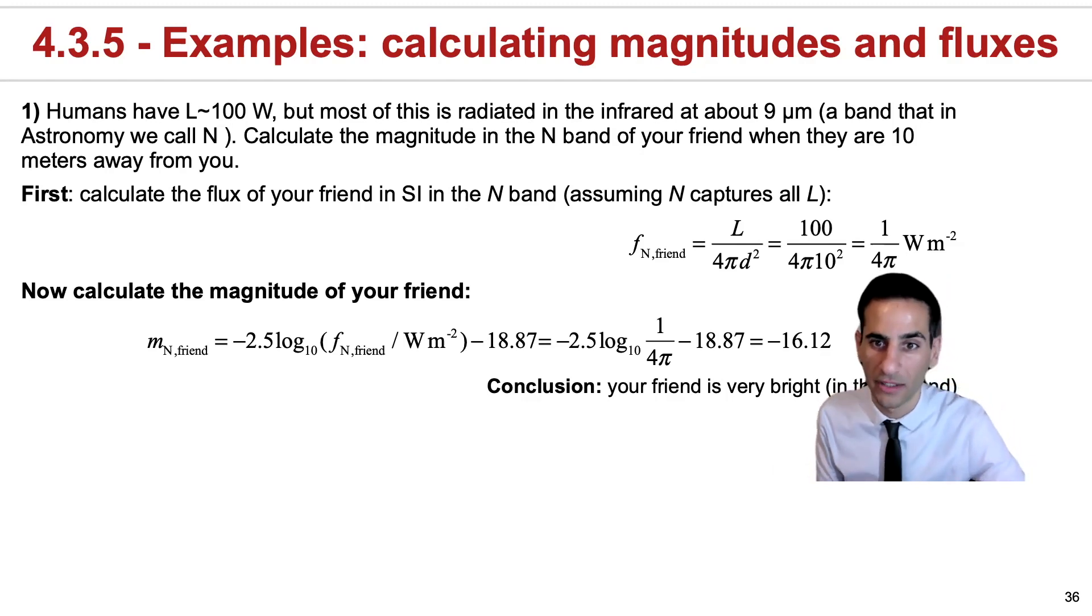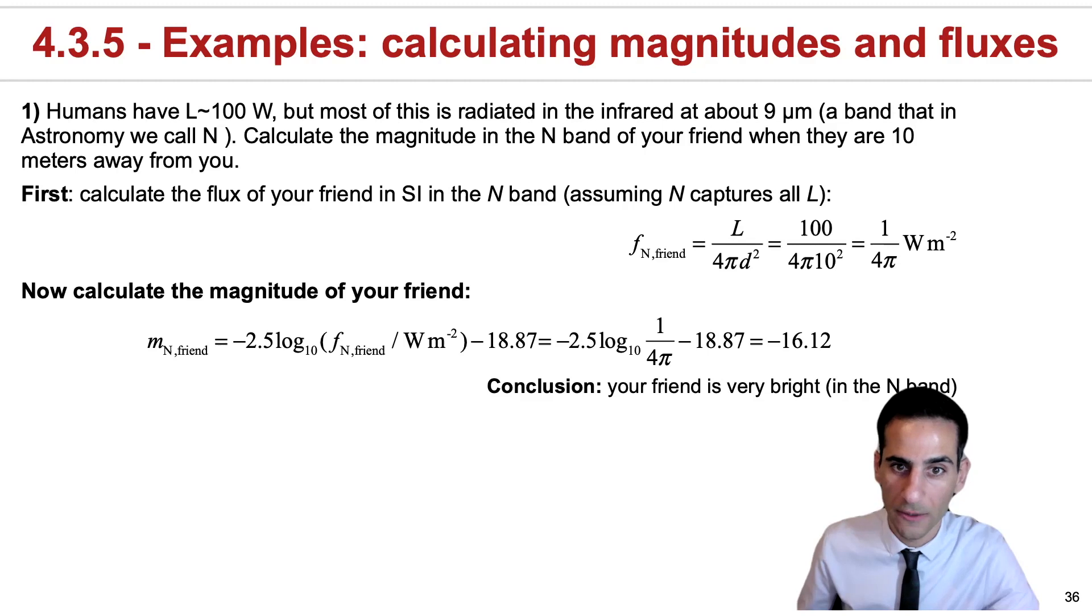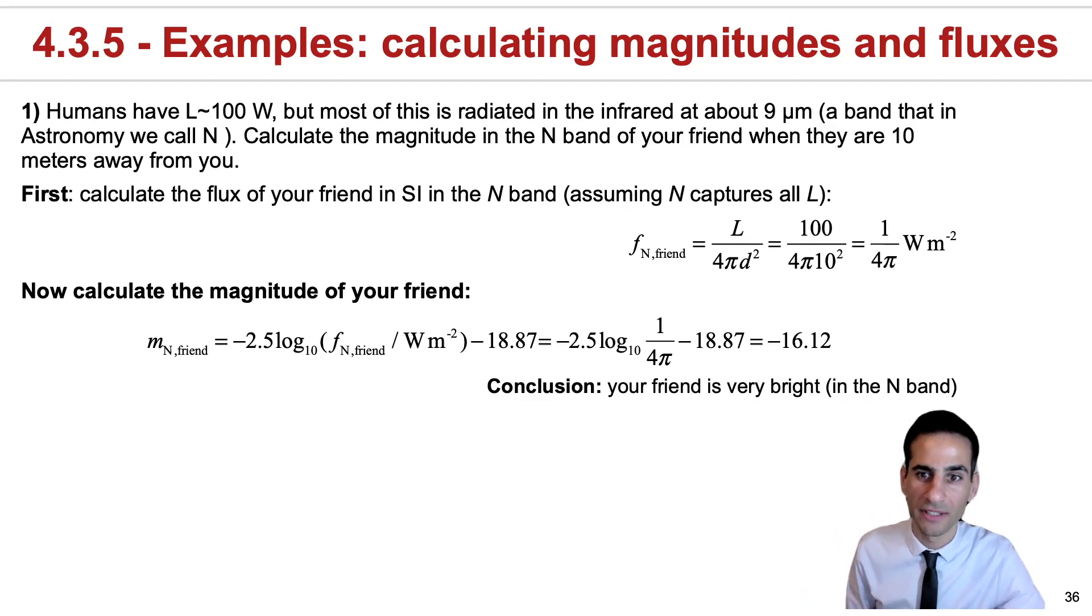I mean, people are quite bright, actually, especially if you're near them. And in this case, the magnitude would be minus 16.12. So you could conclude, and if your friend is feeling unhappy, that they are actually indeed quite bright, even though this is only in the N band.